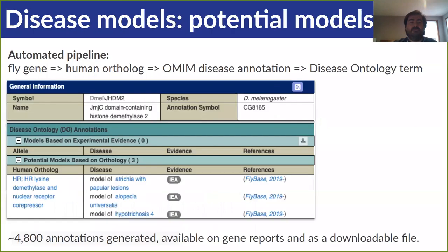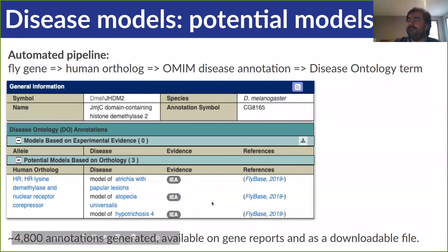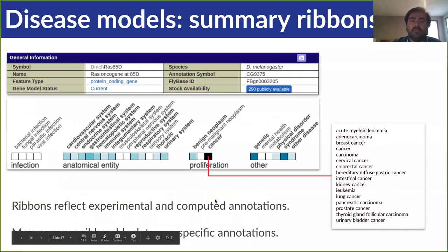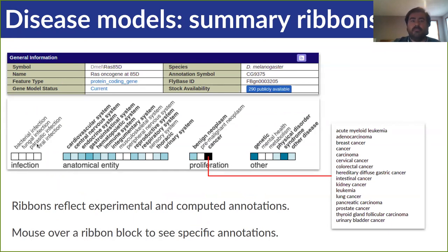On to disease model data at Flybase. I want to highlight two improvements. First, we now annotate fly genes predicted to be relevant to human disease via their orthology to human disease-associated genes. There are about 4,800 of these annotations, and you can find them on gene reports or get them all in one bulk file. Second, we have what we call ribbons that summarize disease model data. There are ribbons for four sets of high-level disease ontology terms — like infection, proliferation, affected anatomical entity, and other disease types. The color of each box represents the number of annotations in each category. If you hover over a box, you can see the list of specific disease annotations for that term, including both experimental and predicted annotations.